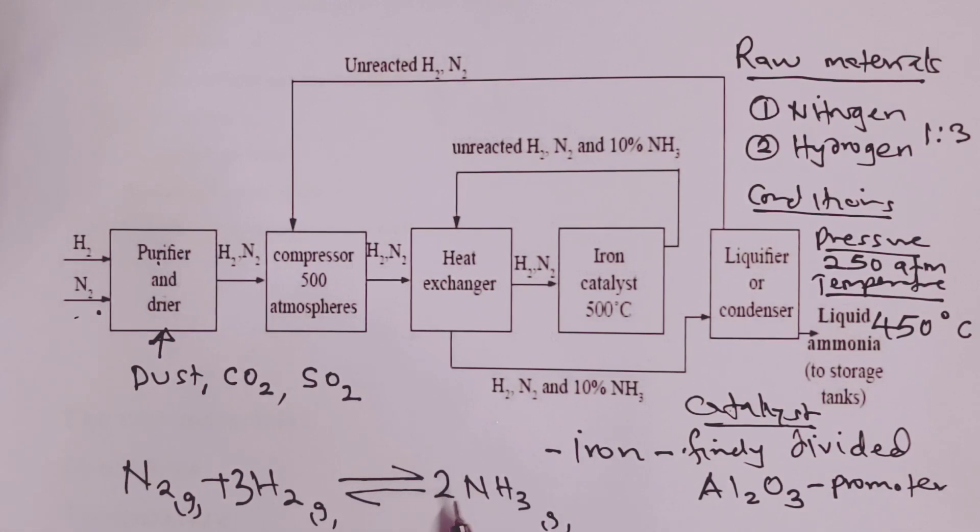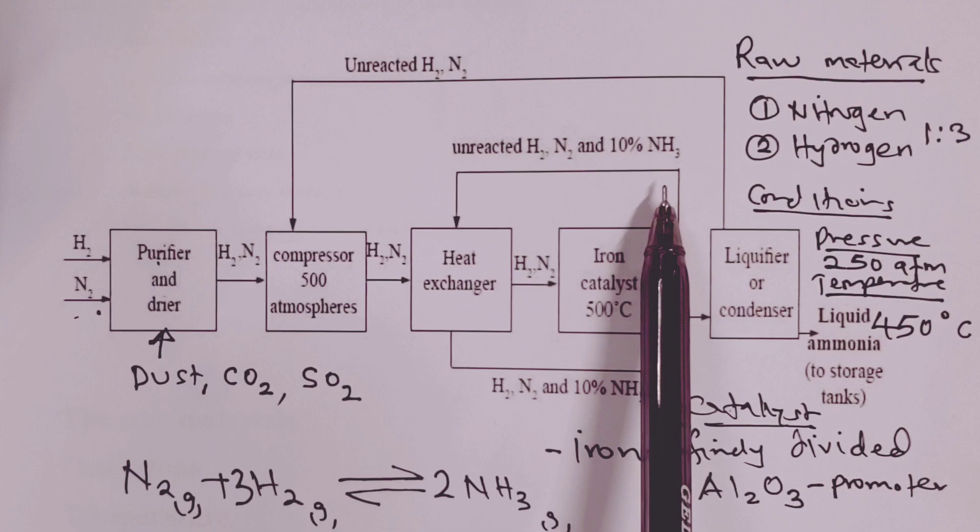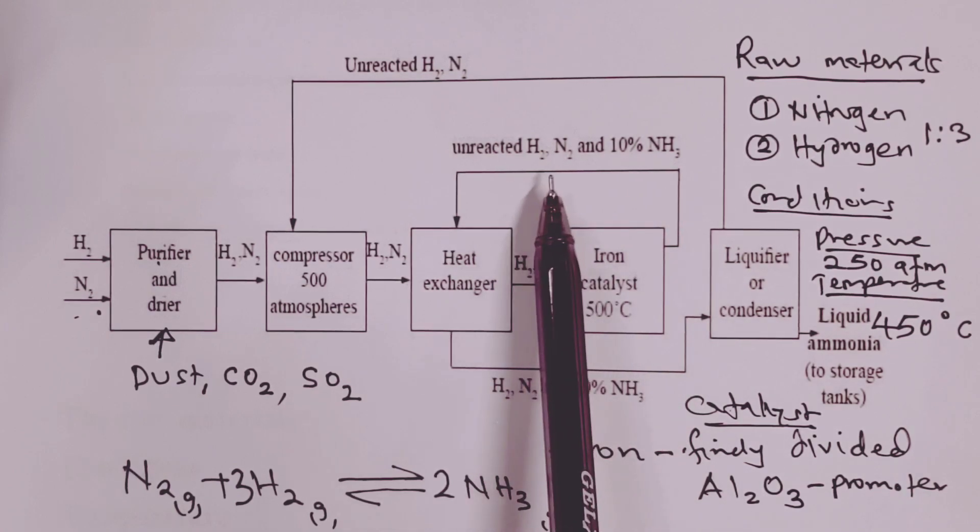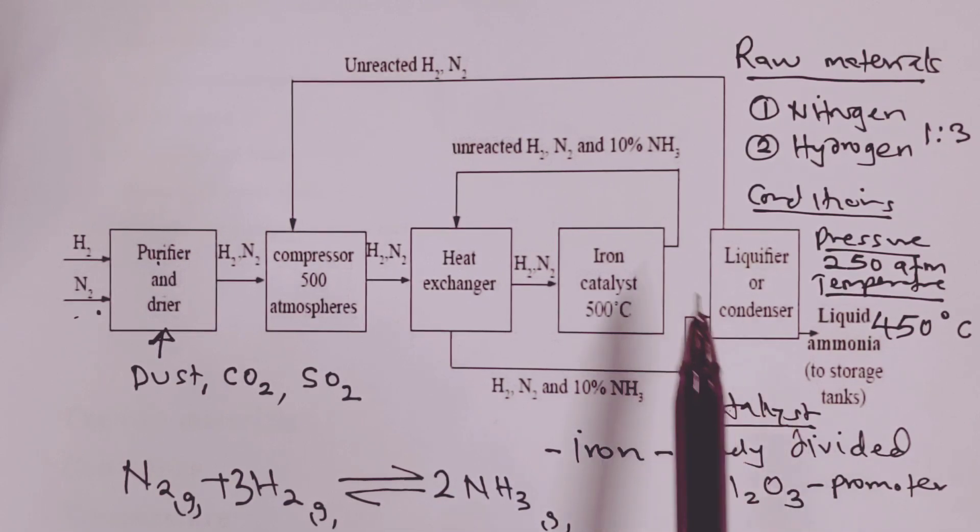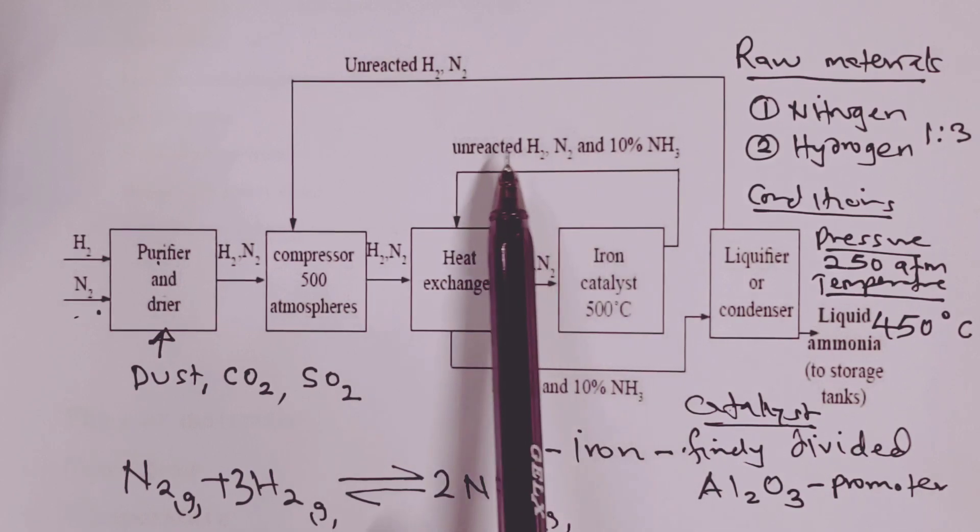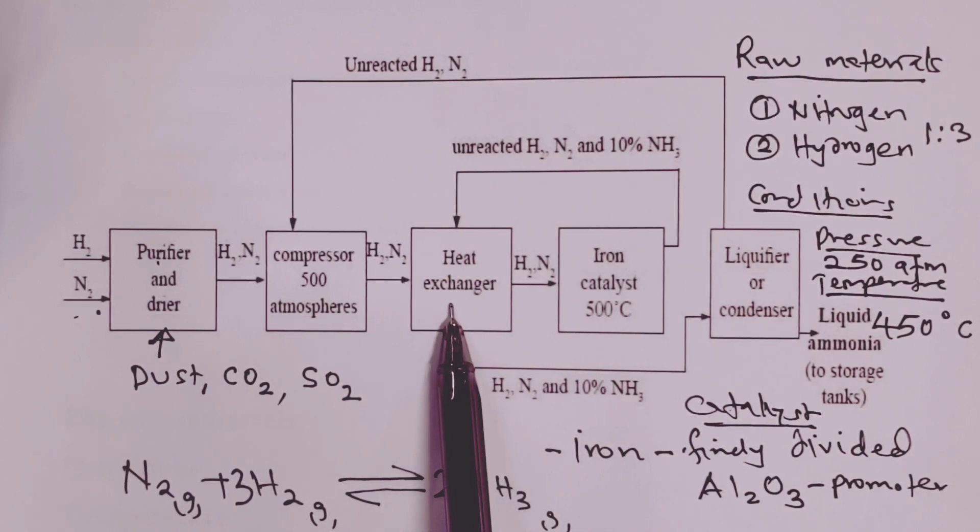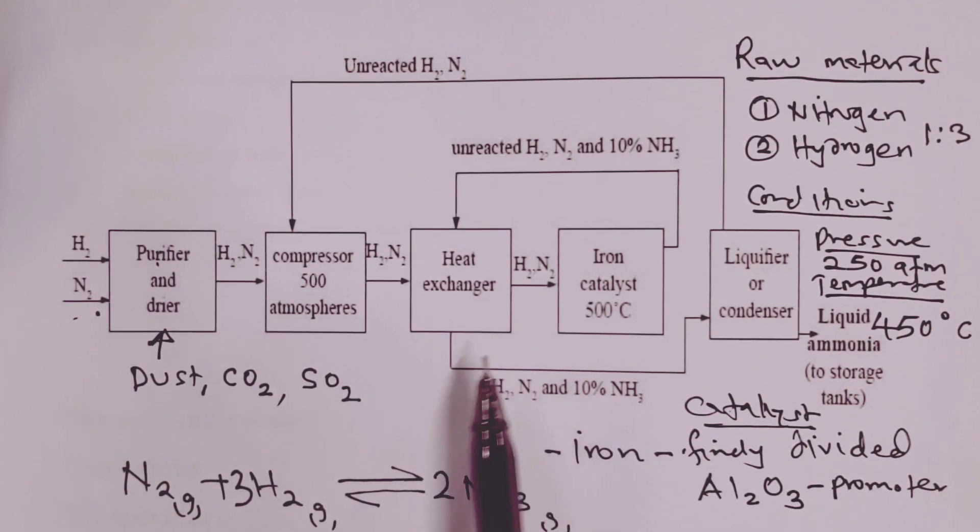Now, this ammonia that is formed here is only 10%. That means the process is not very efficient. Most of the gases go unreacted. So the reaction here is exothermic. It produces heat. So temperatures are going to go beyond 500 degrees Celsius. So what we do as usual is to take back the hot mixture of ammonia, just 10% of it, and the unreacted raw materials back to the heat exchanger. Here, we use them to preheat the incoming gases and they get cooled in the process of preheating the incoming gases.